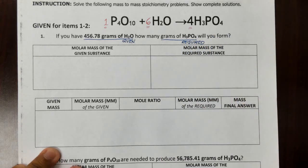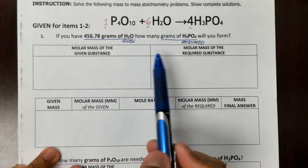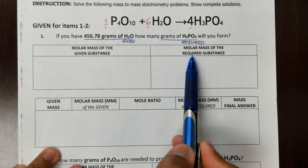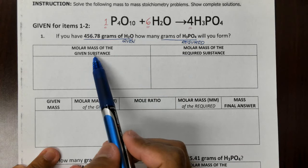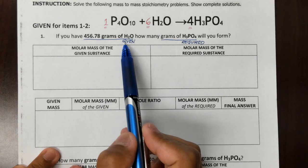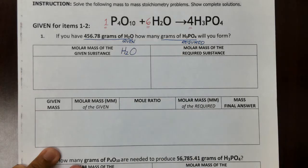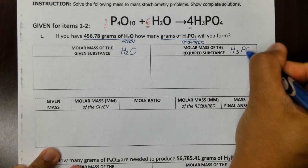Now that we've correctly labeled what's our given and what's our required, the first step — since we're not given the molar mass — is to calculate it. The first molar mass needed is for the given substance H2O, and the second is the molar mass of the required substance H3PO4.